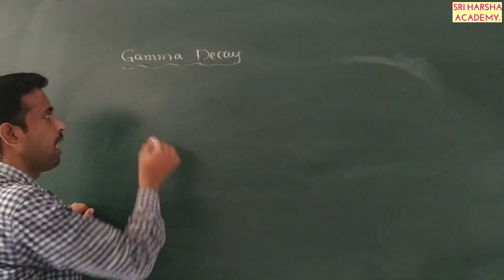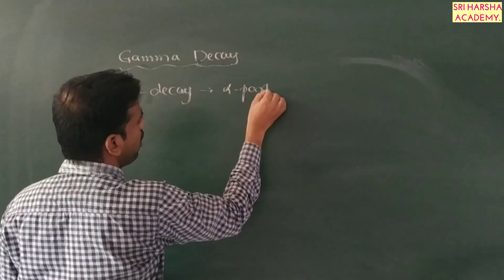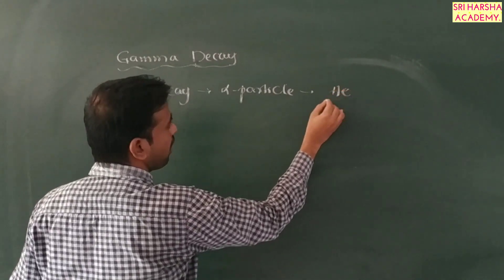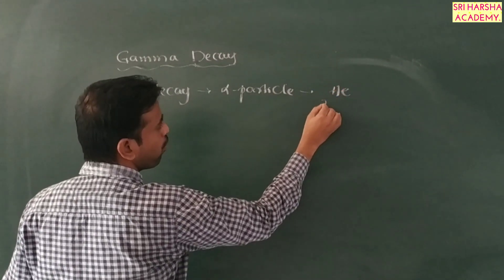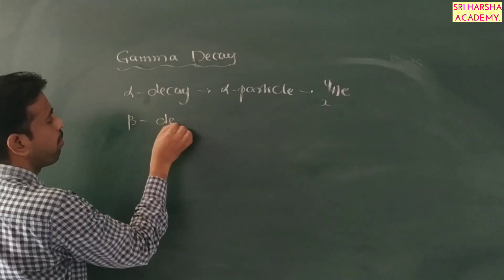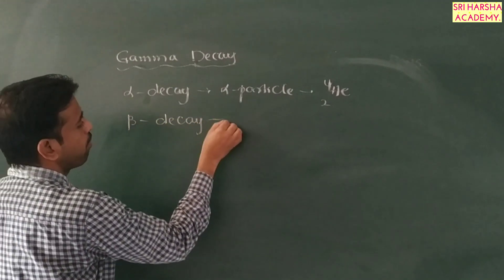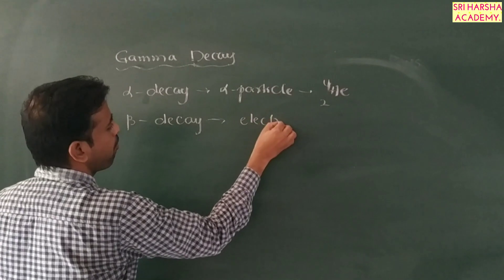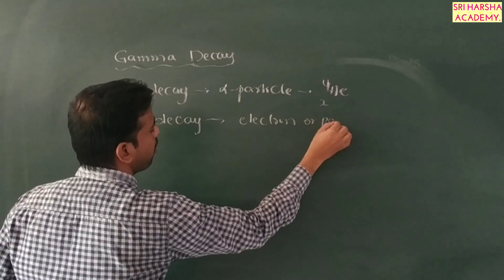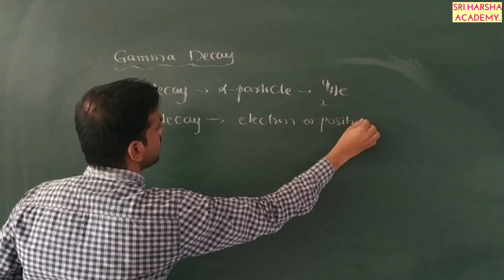In alpha decay, the alpha particle comes out from the nucleus. The alpha particle is essentially a helium-2-4 particle. In beta decay, either electrons or positrons are emitted from the nucleus.